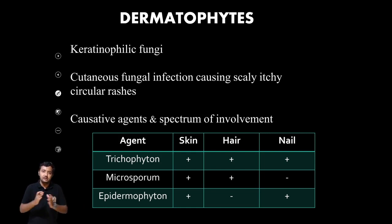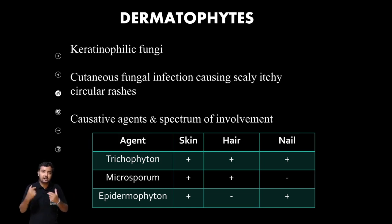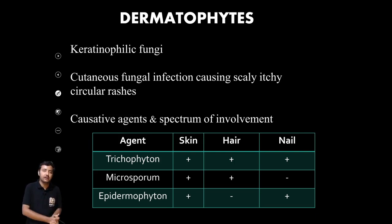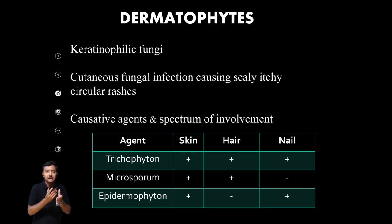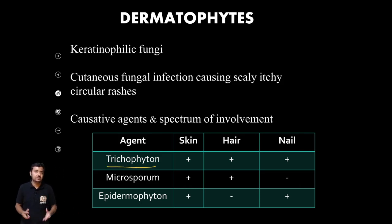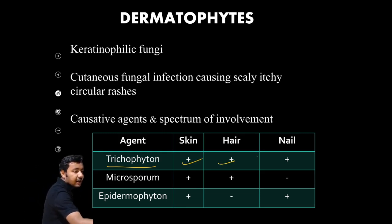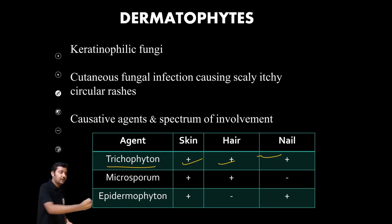The causative agents have a broad spectrum of involvement. The main areas they affect are keratin-rich structures — mainly skin, hair, and nails — where keratin is abundant. So these fungi mainly affect the skin, hair, and nails. One by one: Trichophyton is a dermatophyte which involves all three — skin, hair, and nail.